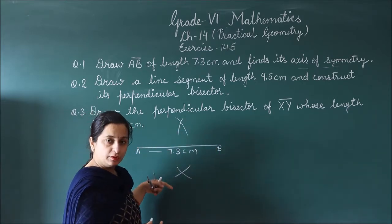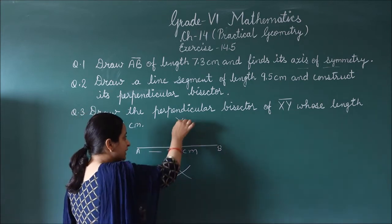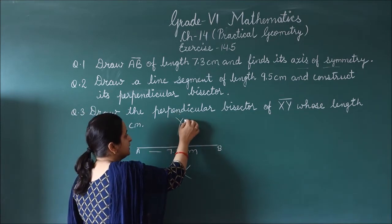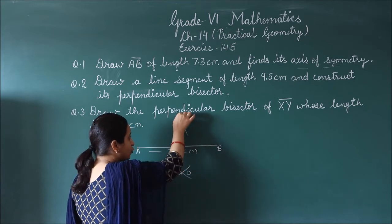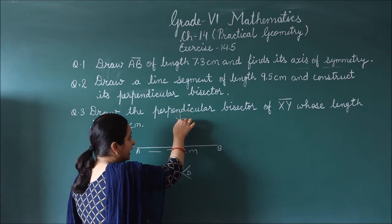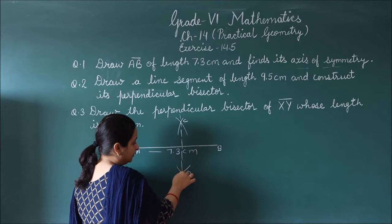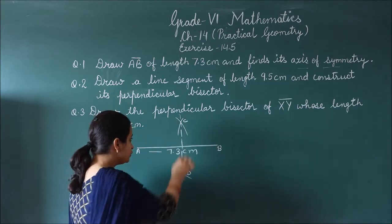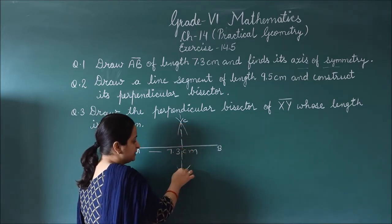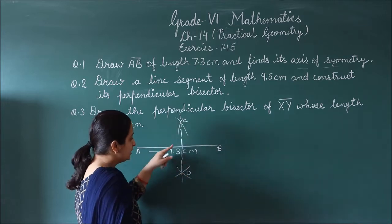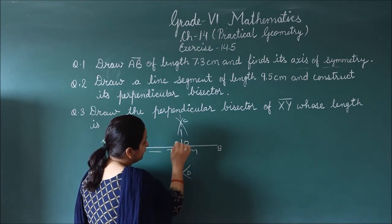Find the intersecting points where the arcs cross. Using a ruler, join these intersection points. This line is the axis of symmetry — it meets the line segment at a right angle and divides it into two equal parts.